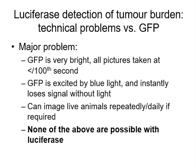Green fluorescent protein is one way of imaging tumours; luciferase is another, and there are significant technical differences. GFP produces a very bright signal — images taken at about a thousandth of a second. The GFP is excited by blue light and instantly loses signal without light. This means you can quickly place animals under blue light, take a quick picture, return them to the cage, and repeat this process every single day to follow tumours. You cannot do that with luciferase, which is much more complicated — it requires a substrate and produces a much weaker signal.